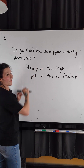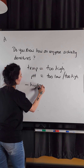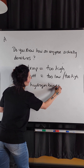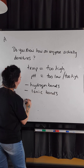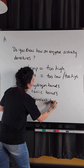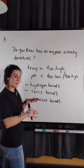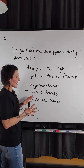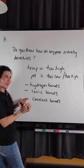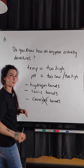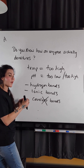If we recall from our theory of enzymes, there are hydrogen bonds, ionic bonds, and covalent bonds that mainly hold that 3D shape — that tertiary structure of the enzyme — together. The change in conditions doesn't really interfere with the covalent bonds because they're very, very strong. However, hydrogen bonds and ionic bonds are weaker.